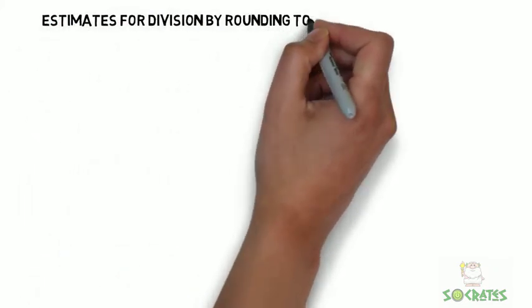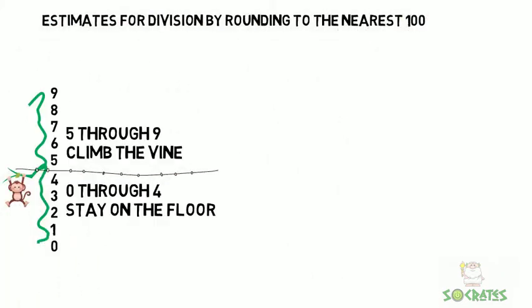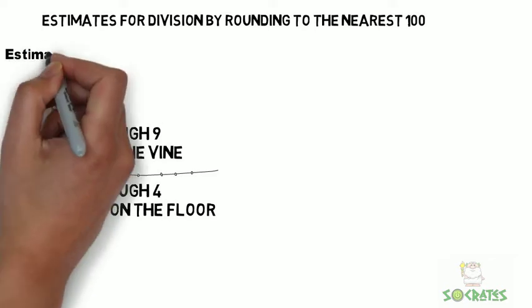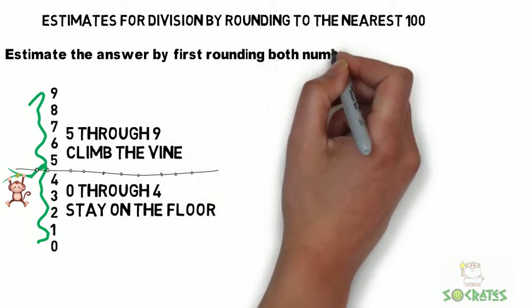Estimates for division by rounding to the nearest 100. Remember our rules for rounding. 5 through 9 you go up and 0 through 4 you go down.